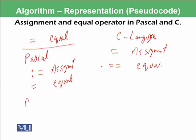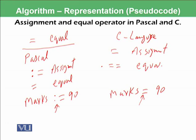In C language, we will say marks assigned by 90. We will talk this as an assignment, but we will use different notation depending upon what we are using as an underlying language.